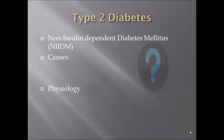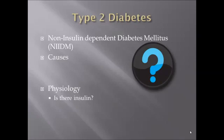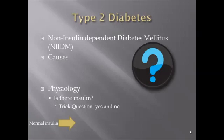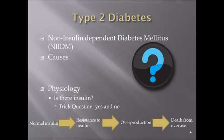Is there insulin in a type 2 diabetic? It's actually a trick question — yes and no. Early on in the disease there is going to be plenty of insulin, sometimes even excessive amounts. This is because type 2 diabetics become resistant to the insulin they produce, so their body produces more and more insulin to make up for this resistance. Eventually, later on in the disease process, the beta cells that produce insulin get tired and die off from being overworked. So initially there is insulin production, but later on there is reduced to no insulin as the disease becomes chronic.